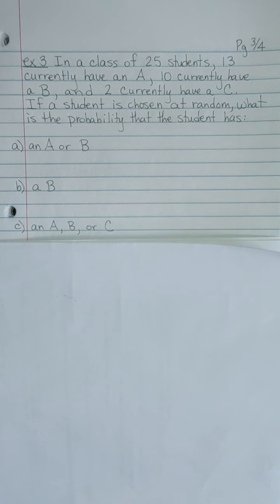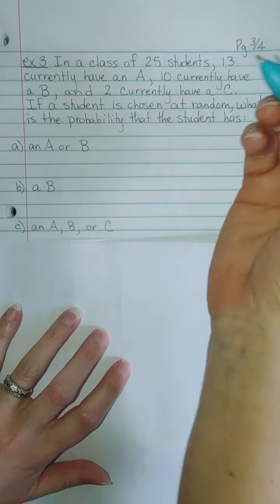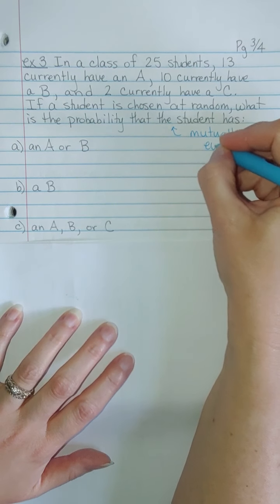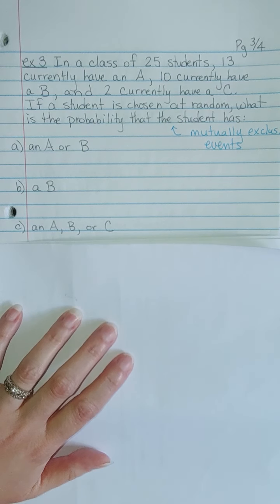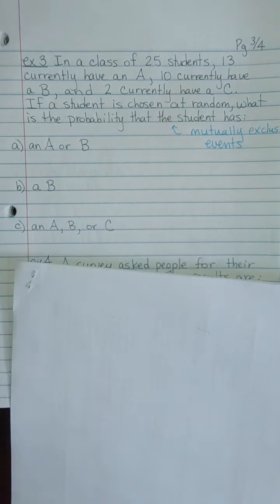In a class of 25 students, 13 currently have an A, 10 have a B, and 2 have a C. If a student is chosen at random, we first ask: are these mutually exclusive events? Yes — it's not possible to have both an A and a B in the class at the same time, so these are mutually exclusive events. That's good because the mutually exclusive formula is easier — we don't have to worry about subtracting off the overlap.